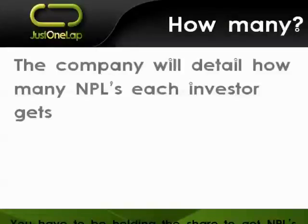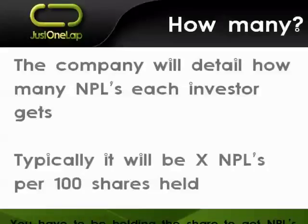The company will detail how many nil pays you get. Typically they will say you get X number of nil pays per 100 shares held. For Capitec, you got 10 nil pays for every 100 shares. So if you owned 1,000 shares in Capitec, you would have received 100 nil paid letters. That entitles you to buy 100 new Capitec shares, or to sell them and take the money rather.